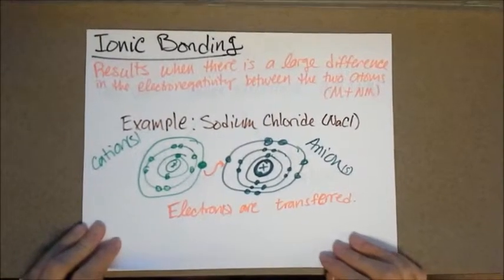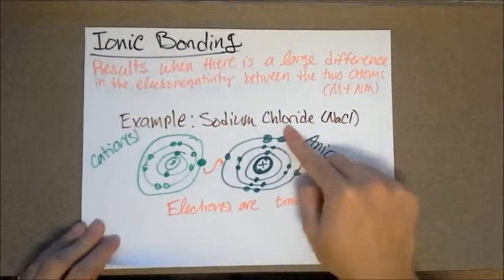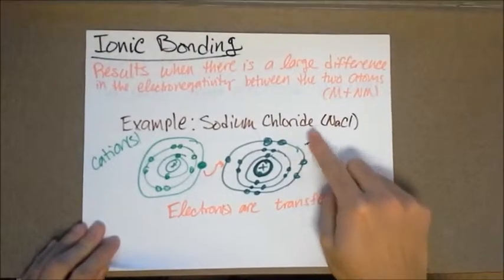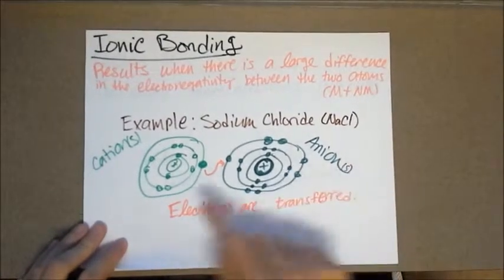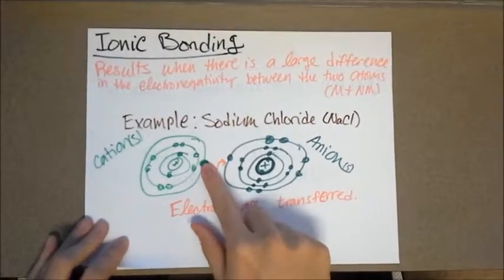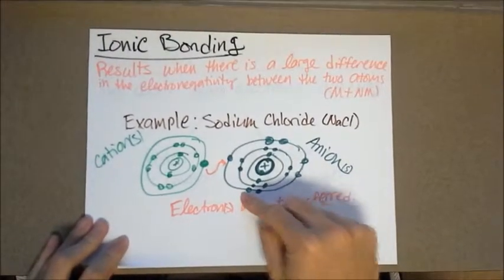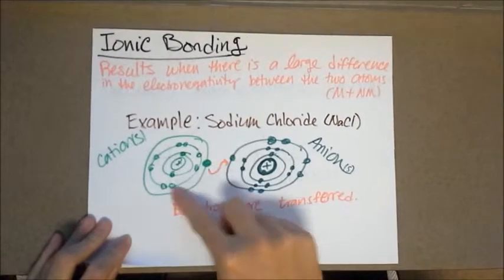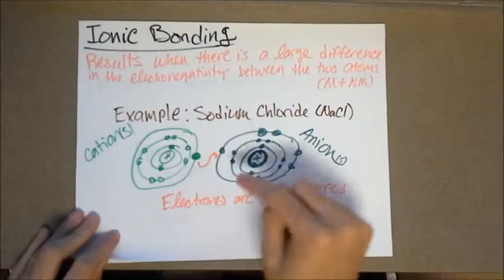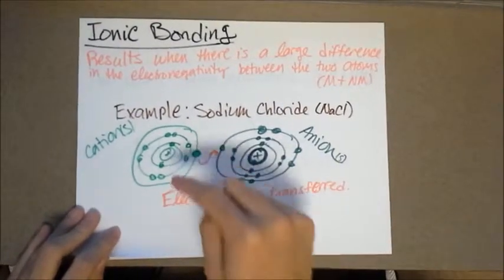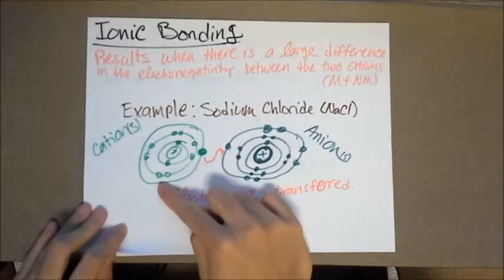To take a look at an example, we're going to look at sodium chloride. Most of you know this as table salt. The chemical formula for sodium chloride is NaCl, composed of a sodium atom and a chloride atom. The sodium atom has one valence electron, whereas the chlorine atom has seven valence electrons. So what's going to happen here is that this sodium atom is going to give up this valence electron to this chlorine atom.